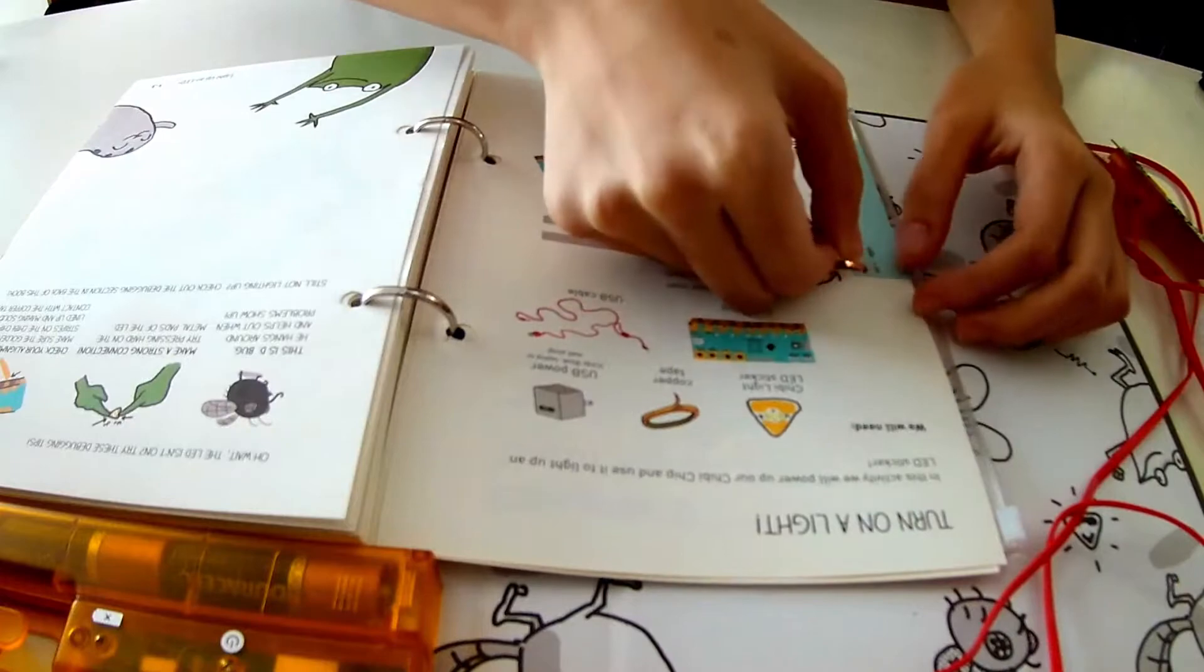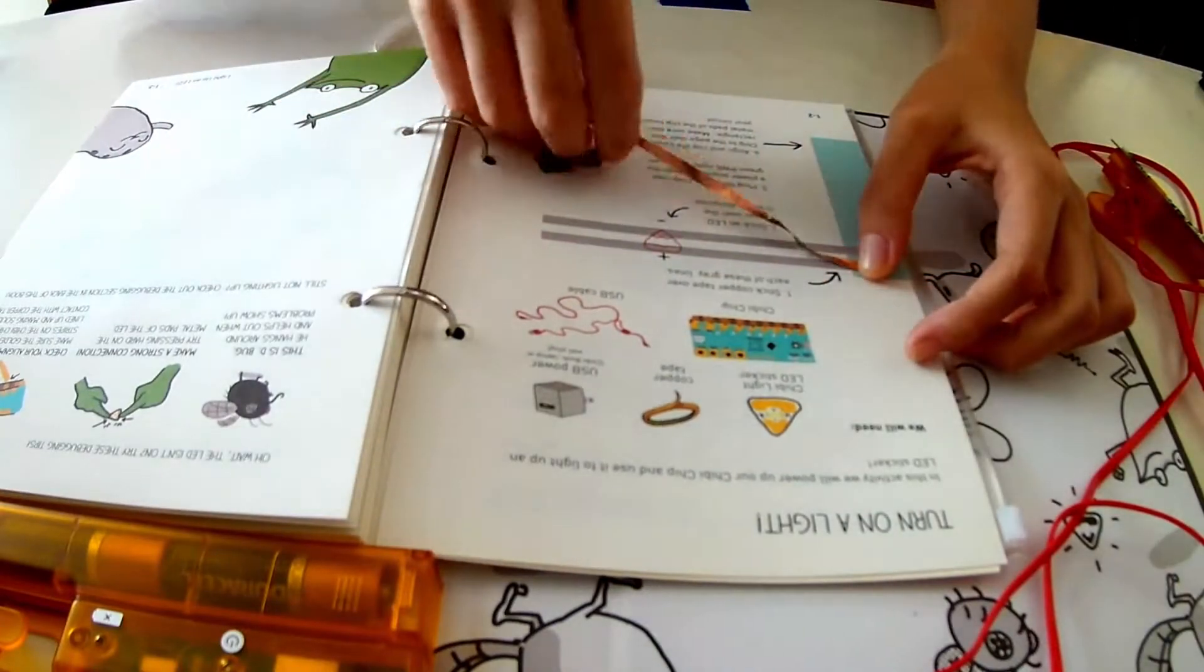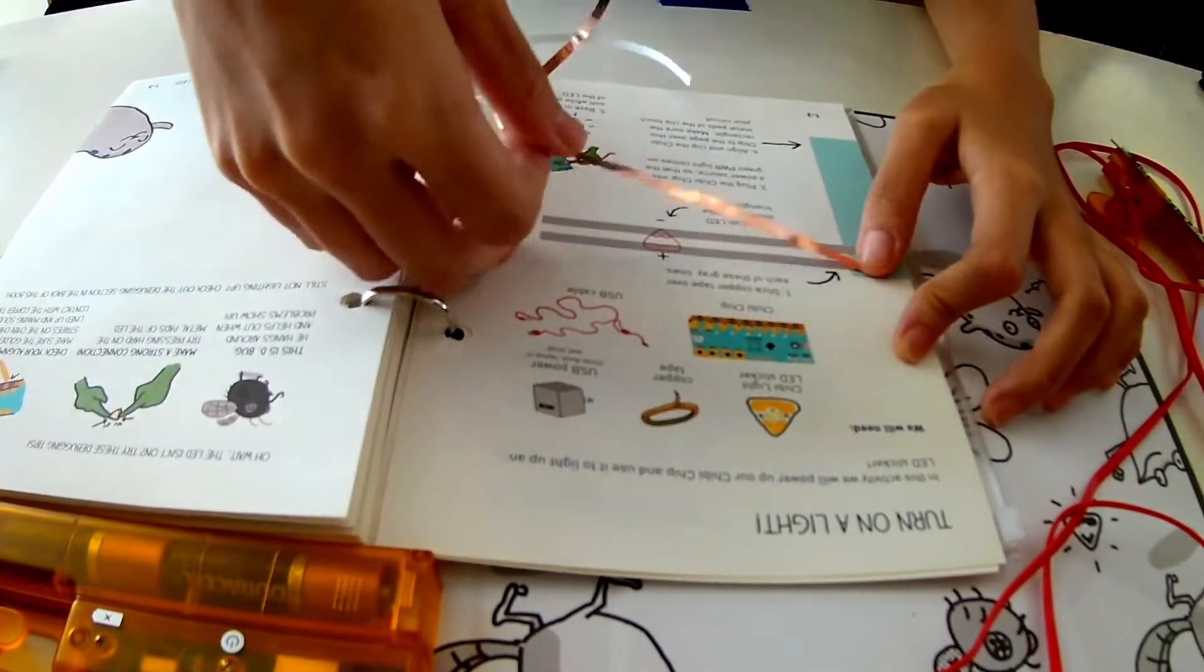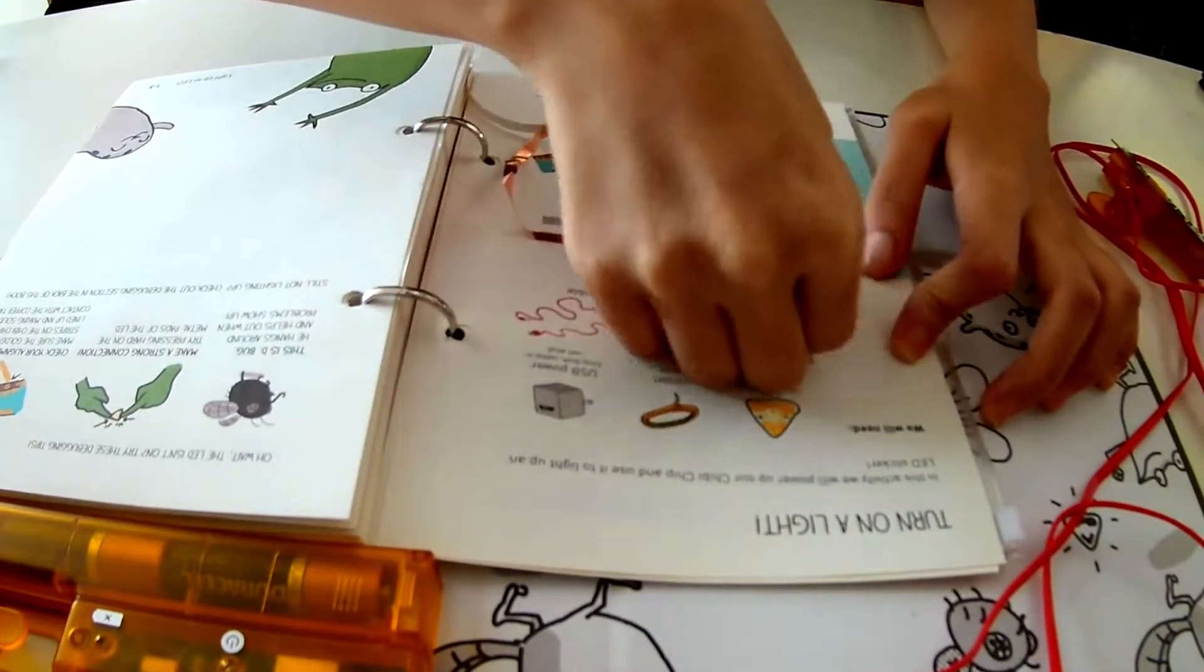First, take some copper tape and peel off the white paper backing. Stick it over one of the gray lines. Try to lay it flat. Smooth out any wrinkles using your fingers.